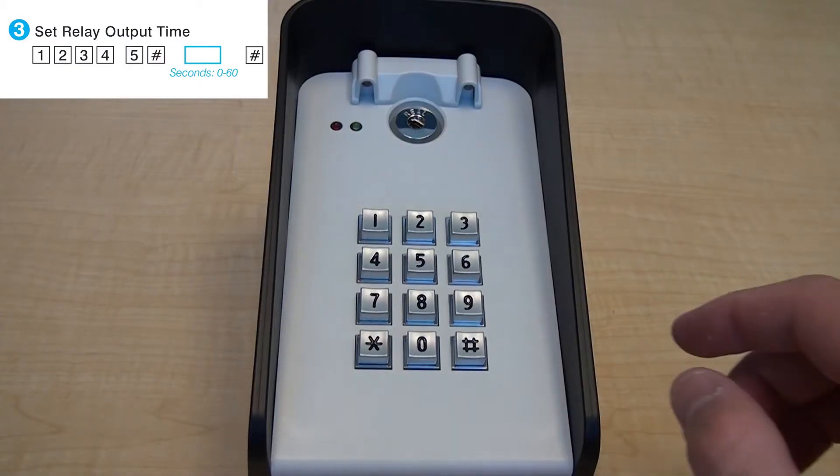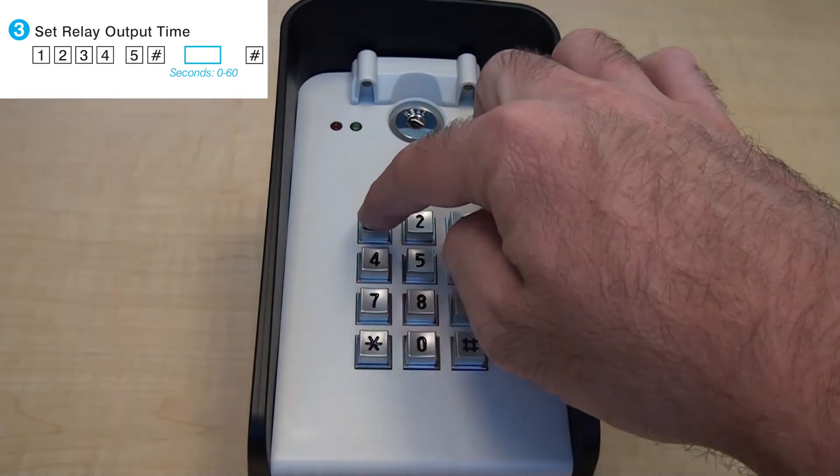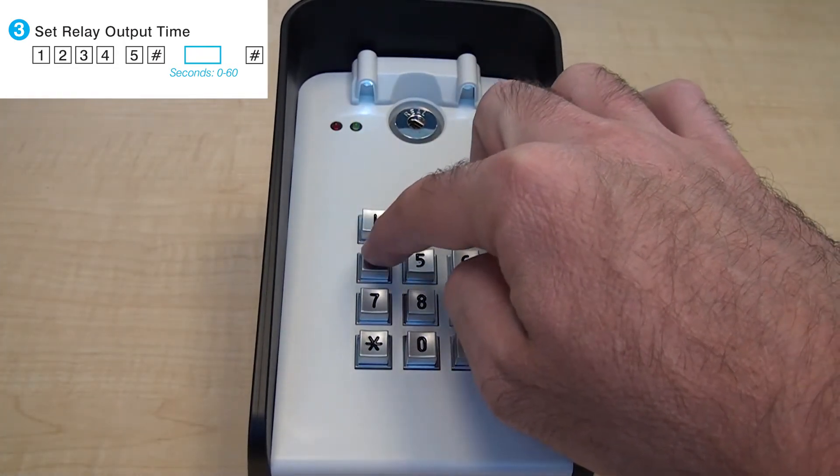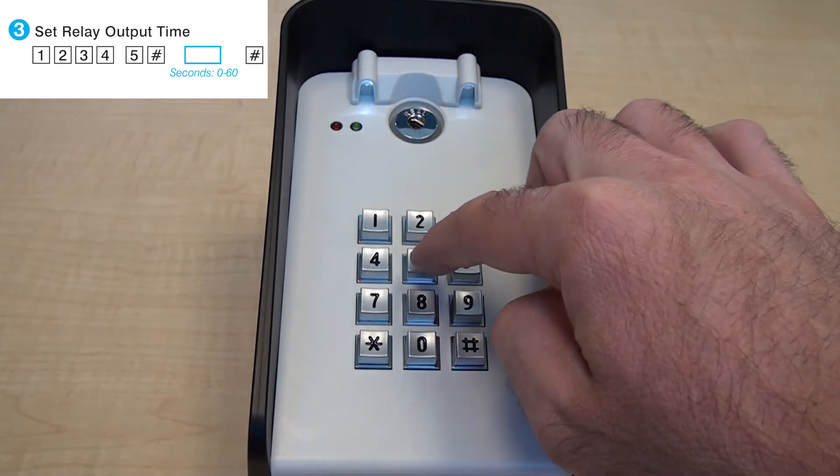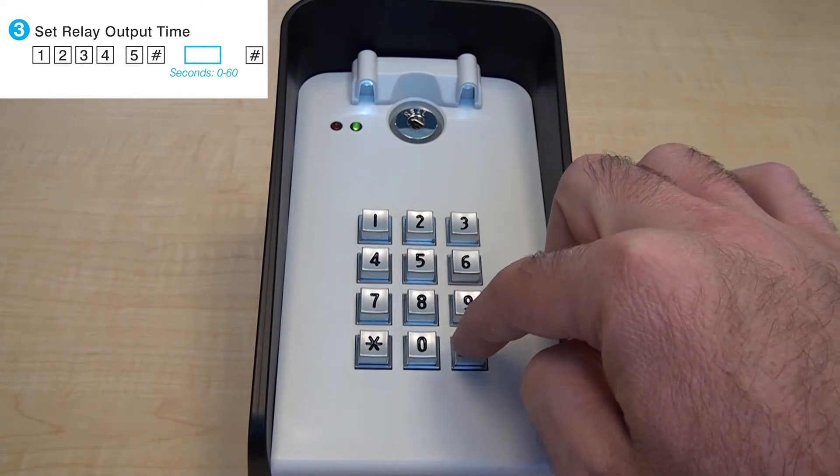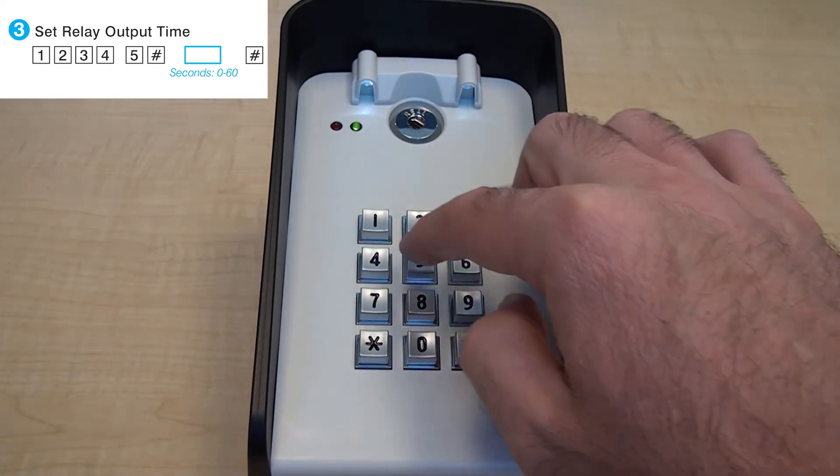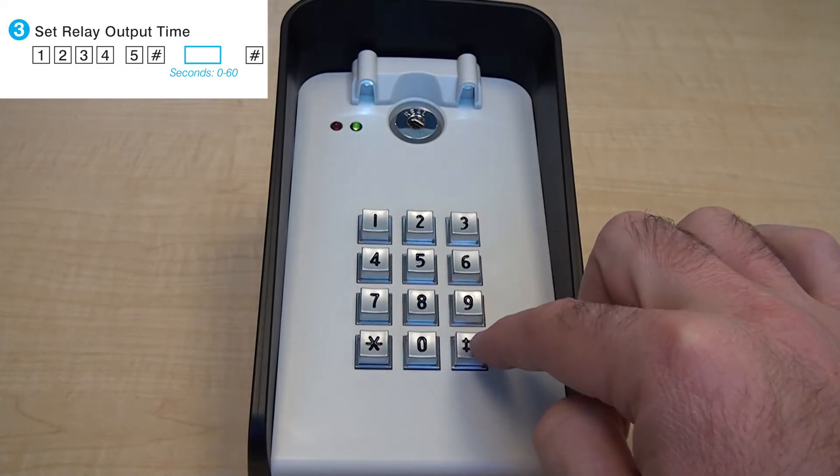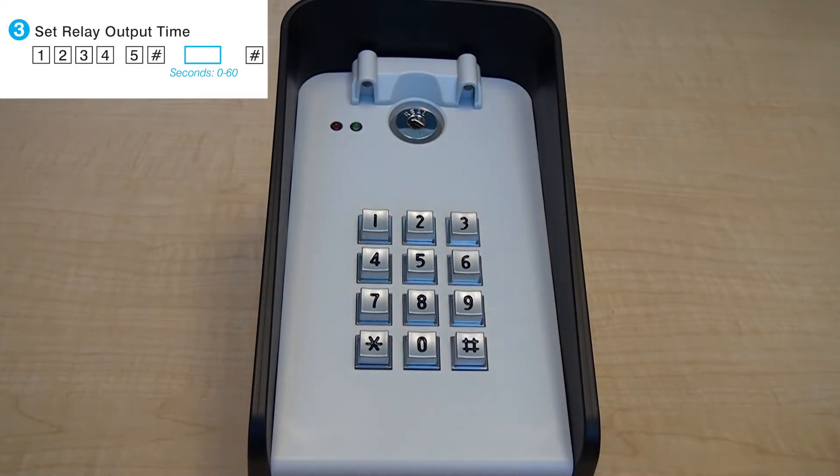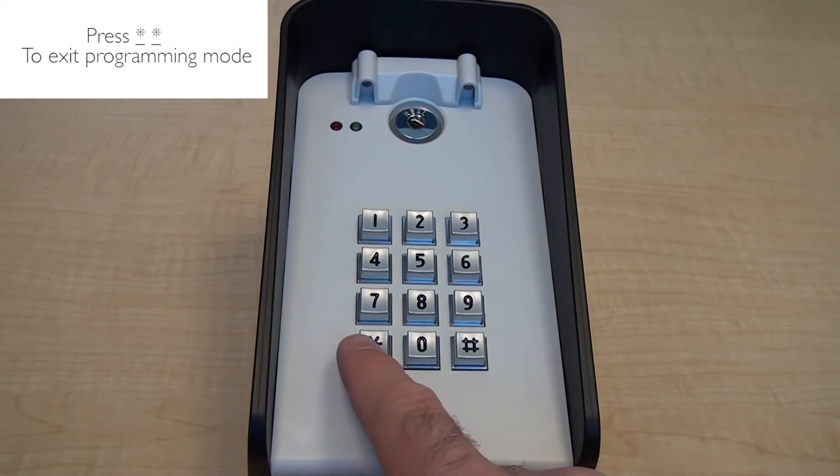To set the relay 1 output time, first use the master code to enter programming mode. Press 5 pound to enter the relay function in the keypad. Choose the relay output time between 0 and 60 seconds followed by the pound sign. When finished, press the star button twice to exit programming mode.